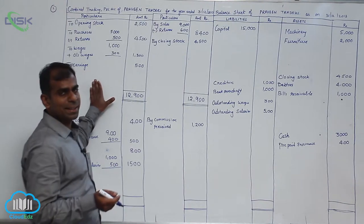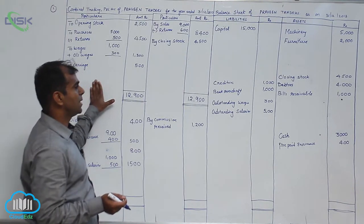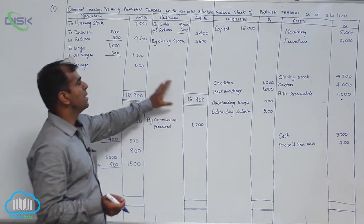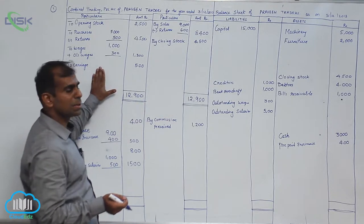You all know how to close the trading account. We are going to close our trading account and the credit side total is $2,900, which is more than the debit side account.